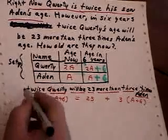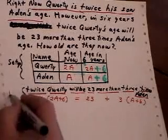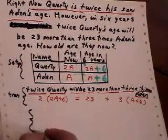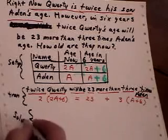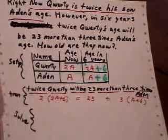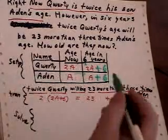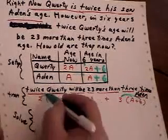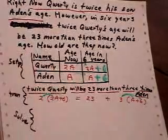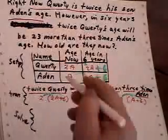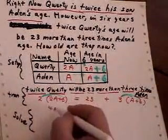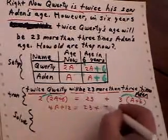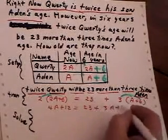Let's now solve our question. Again, with any sort of bracket, my first step is to clear out the brackets. So I'm going to do three times both of those, two times both of those. So that will give me 4A plus 12 is 23 plus 3A and 18.